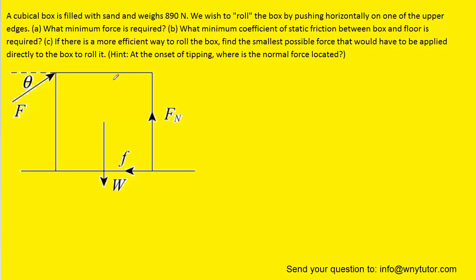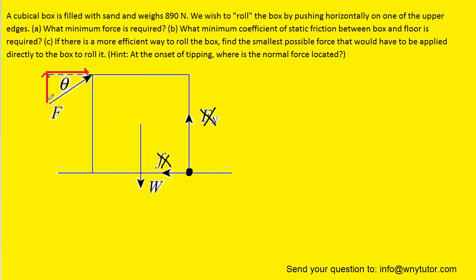On to Part C. It turns out we can apply a smaller force to the upper left edge of the box to get it to rotate if we apply that force at an angle relative to the horizontal. As the applied force pushes on the left side of the box, the box rotates about the same corner pivot. The normal force and frictional force are again excluded from the torque equation since they pass through the pivot. We break this force into its Y component, F sine theta, and its X component, F cosine theta.